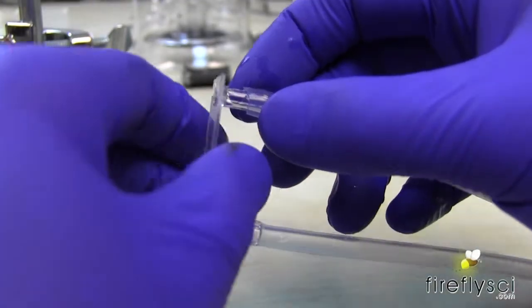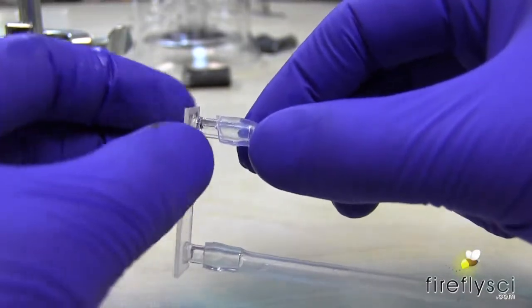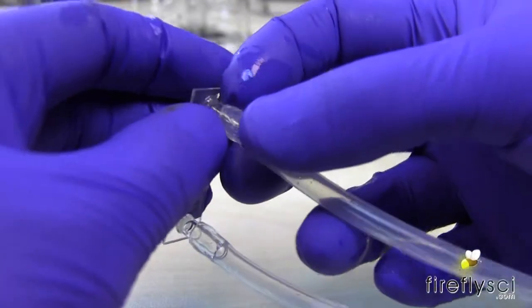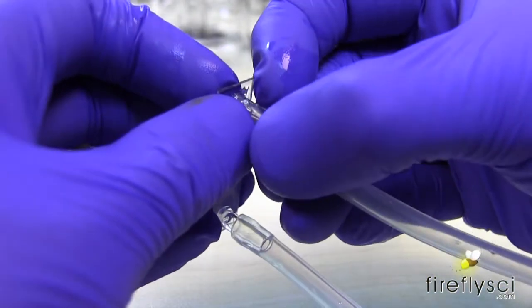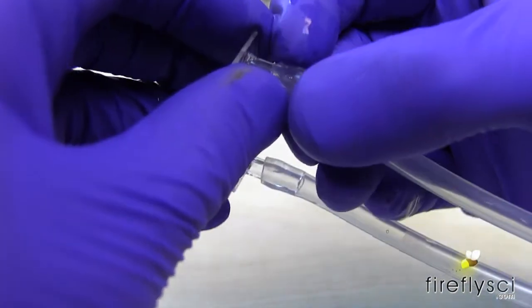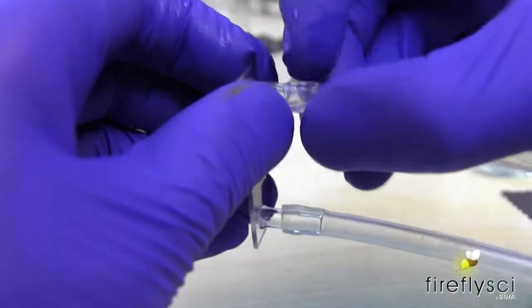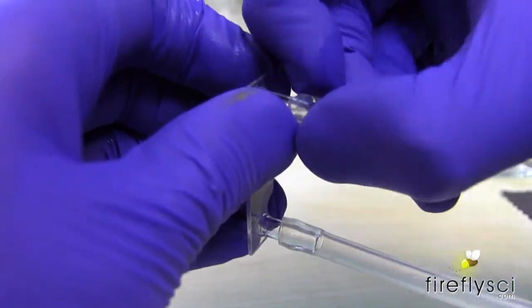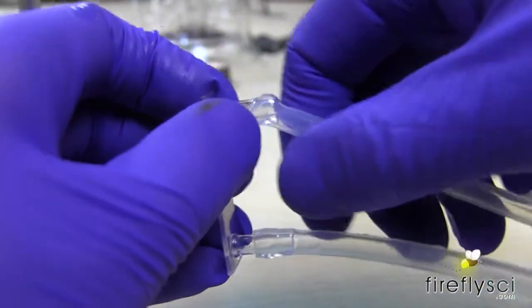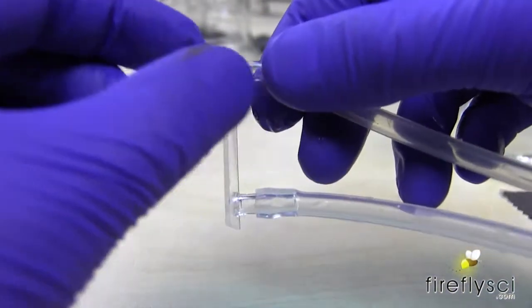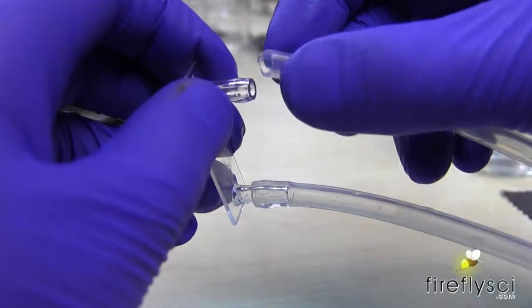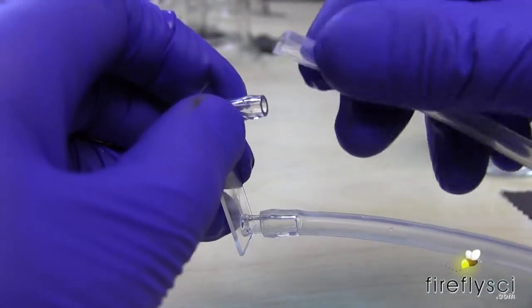I just wanted to make one note about removing the tubing from the connectors here and you want to pull it off one side of the tube at a time rather than pulling it straight off because you could snap this completely off. If you pull like directly out like this you are going to break this here. So you pull off one piece one side at a time and it will come off really easily.